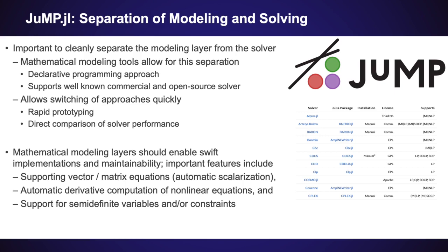One of the biggest reasons Julia is so appropriate for this package is due to JuMP, a modeling language for mathematical optimization. To explain why JuMP is so important, we must ask: what does creating an optimization-first platform for power systems modeling mean from a practical standpoint? Separating the modeling from the solver algorithms is very important. JuMP uses a declarative programming approach where the program structure is described but the method for finding the solution is not. In this way, a variety of well-known solvers can be supported to solve a large number of problems, and optimization problems can be switched between approaches without having to re-implement equations — essential for rapid prototyping and allowing direct comparison of solver performance for identical problems and formulations.